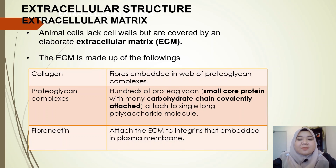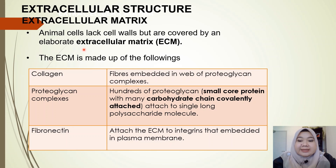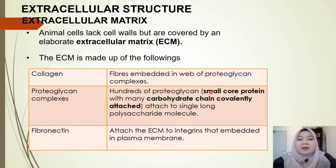In the animal cell, we have the extracellular matrix, or ECM. Because animal cells lack a cell wall, they are covered by this elaborate structure. The components of the ECM include: first, collagen — fibers embedded in a web of proteoglycan complexes. Proteoglycan complexes consist of hundreds of proteoglycans, which are small core proteins with many carbohydrate chains covalently attached, and these attach to a single long polysaccharide molecule.